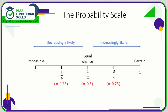As we go to the right, the likelihood is increasingly likely. Going towards zero means the probability is decreasingly likely. For example, the probability that it rains on at least one day in December in the UK is not 100% certain but pretty close, so you'd put an X on the line close to one. The probability of throwing heads on a coin is an equal chance, so that's 0.5. The probability of snow in August in the UK is extremely unlikely, so you'd put an X somewhere near zero.